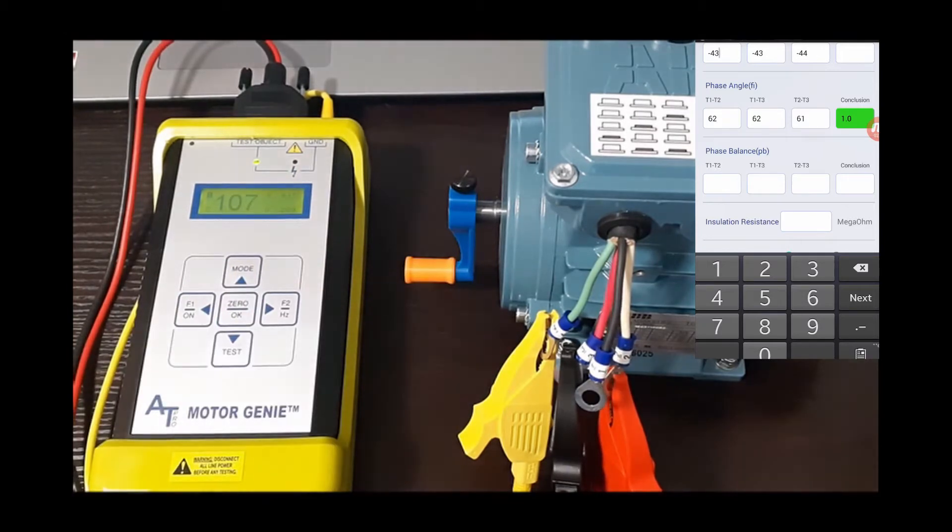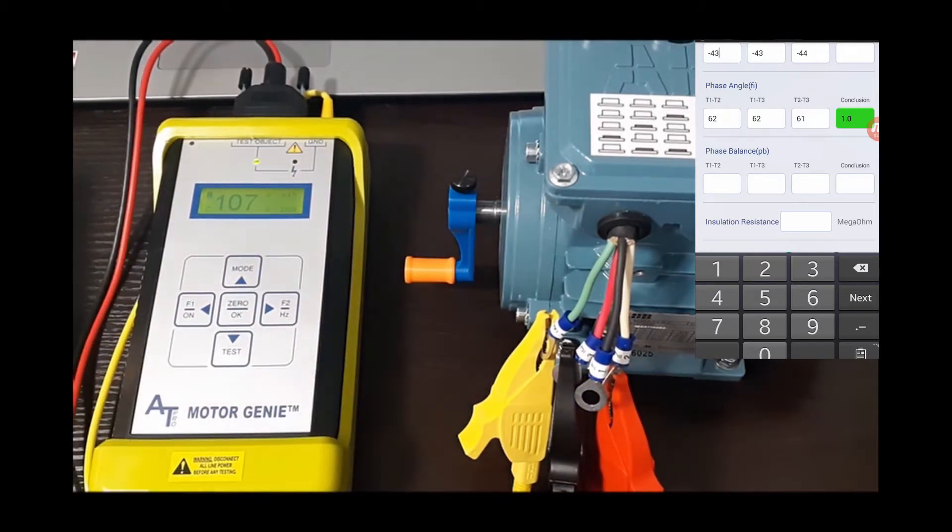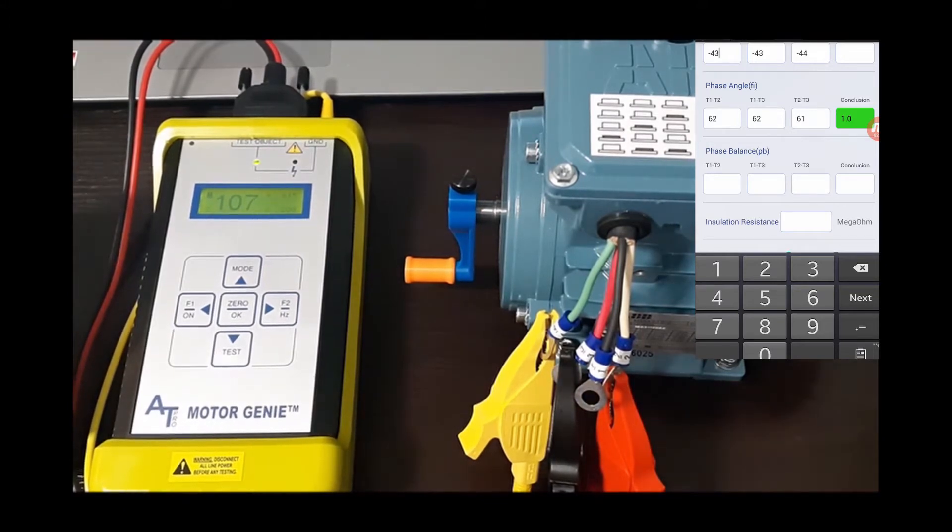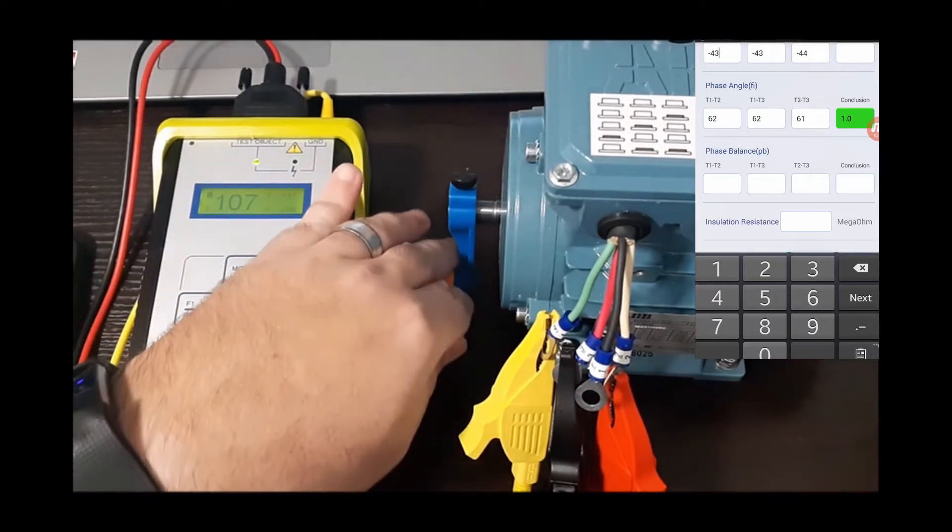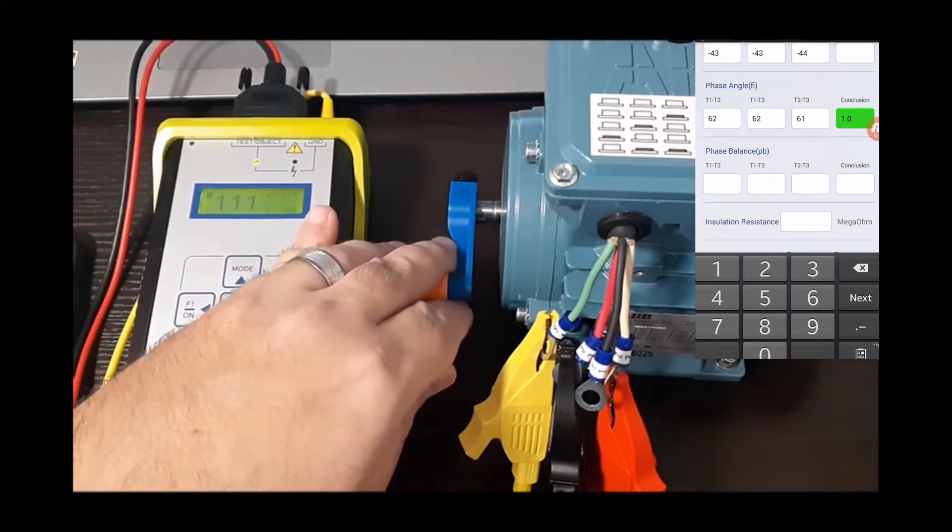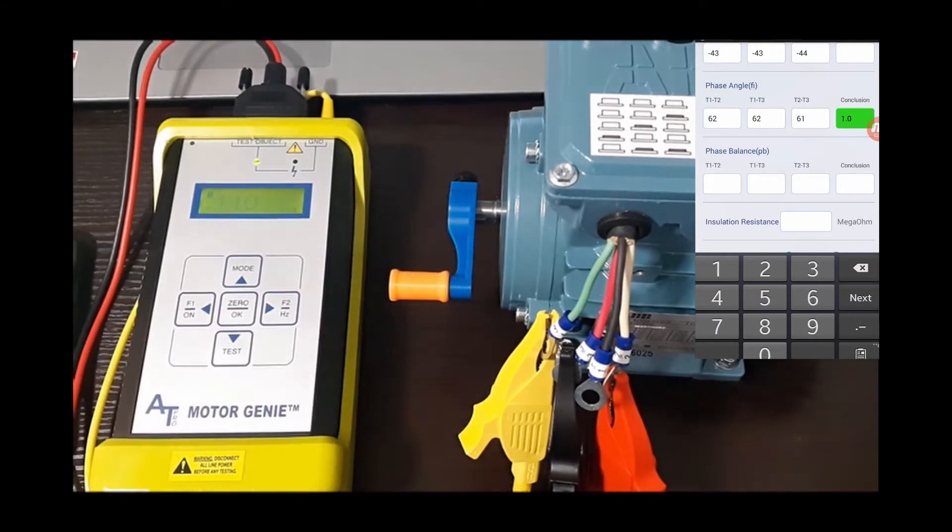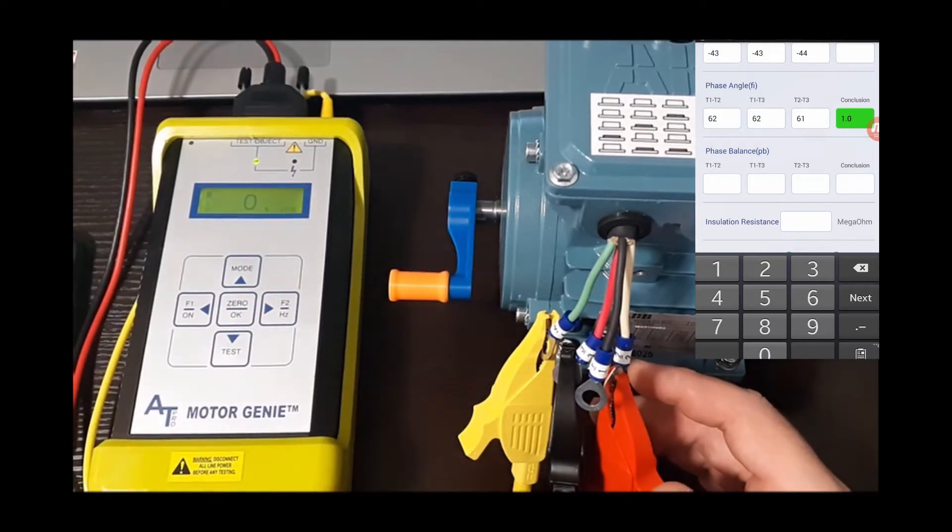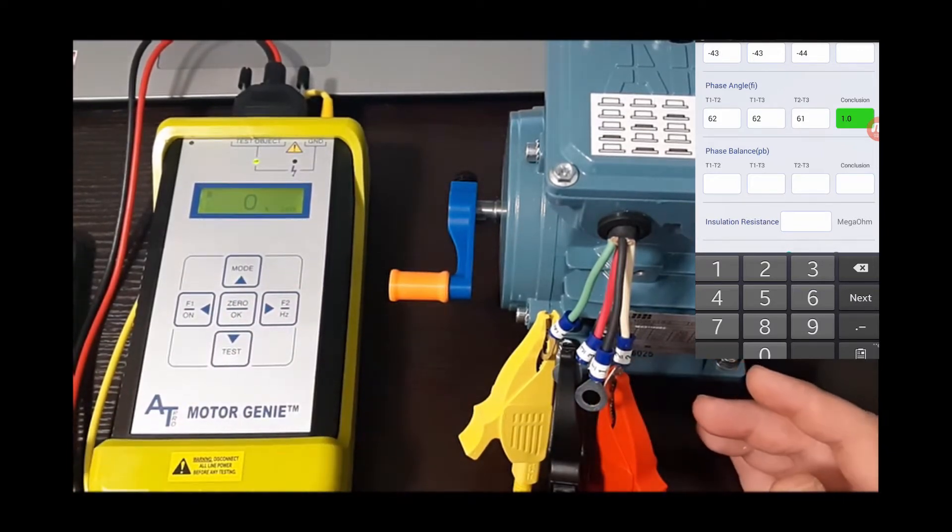Which is also 111, so that's a good sign that they're all reading at that same. We're looking for the highest value here for phase balance so we can just take any of these numbers. So we're going to take the 2-3, we're going to get it at the 111, hit 0. Now we're going to mark that down as a 0 here.